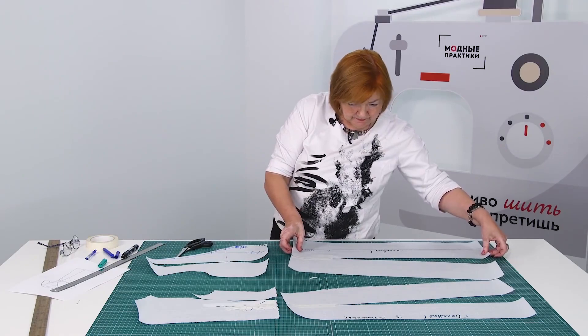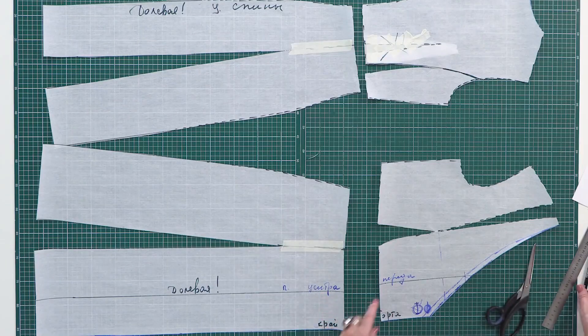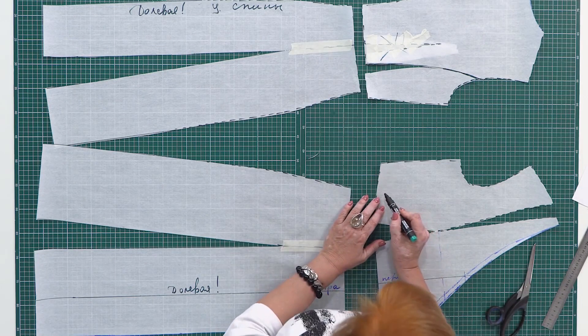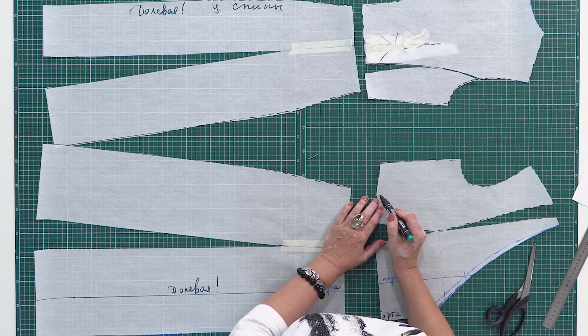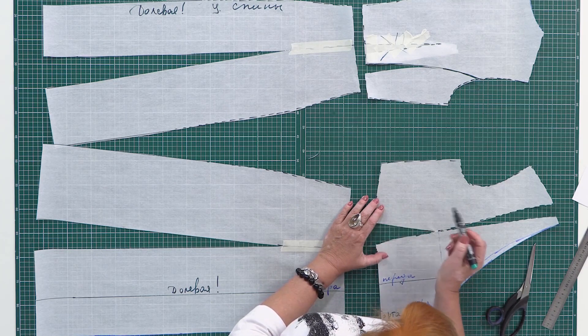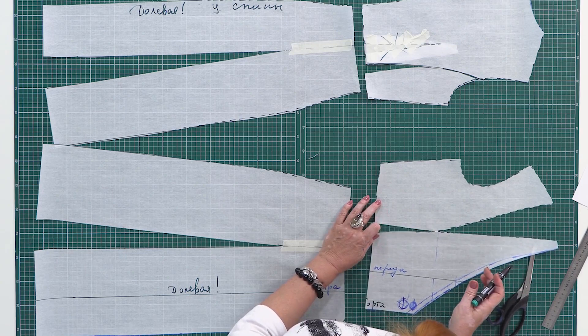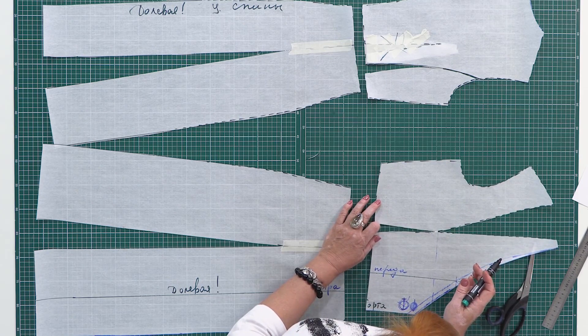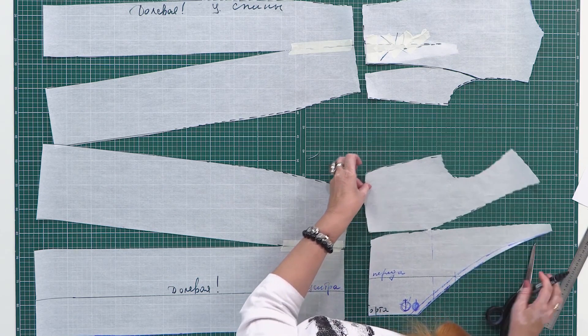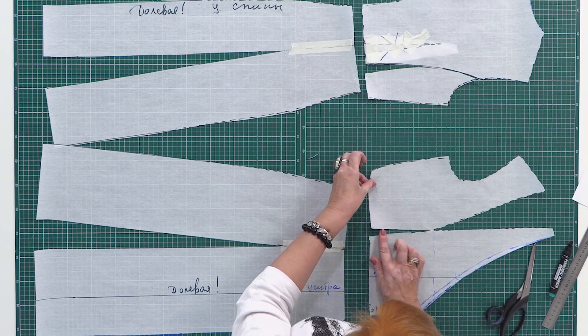Let's have a look at the front bodice. I also need to draw a side detail here. You can draw a side detail of any shape you like. I'll close this dart as well.